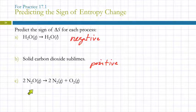How about this chemical reaction? These are all gases. 2 N2O going to 2 N2 plus O2. It's going to be positive because we're starting with two gas molecules and ending up with three gas molecules.